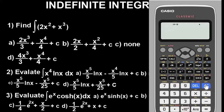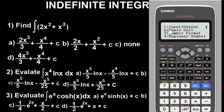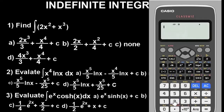The next important thing is to put your calculator in radian mode for solving integration. To do that, press Shift, then Menu, then category 2 for Angle, then press 2 for the radian option. It's now in radian mode — you can see it has switched from degree to radian.